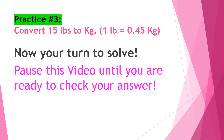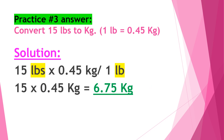Practice number three: Convert 15 pounds to kilograms. 1 pound is equal to 0.45 kilogram. Now it's your turn to solve — pause this video until you are ready to check your answer. Solution: 15 pounds times 0.45 kilogram over 1 pound — cancel out the pound and the unit left will be kilogram. 15 times 0.45 gives you 6.75 kilograms.